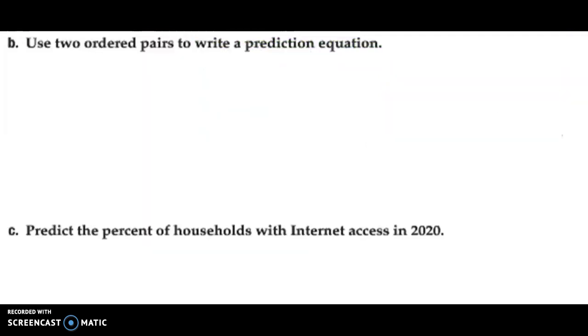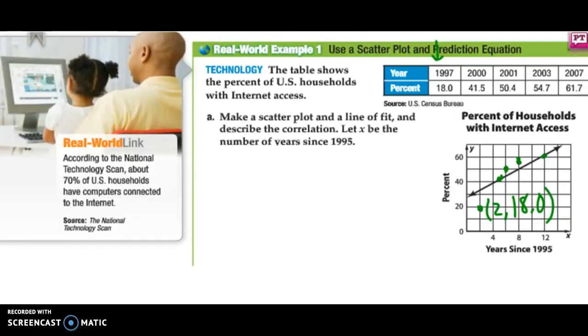The next part, use two ordered pairs to write a prediction equation. Now, you'll see our line of fit that we drew actually is through two of the points. So, you want to try and get it through two points, at least. And then have the rest of the points, either most of them, about half be above the line and half below. So, in this case, we had three points that were not on the line. So, two of them are above, one is below. I'd say that's a pretty good line of best fit.